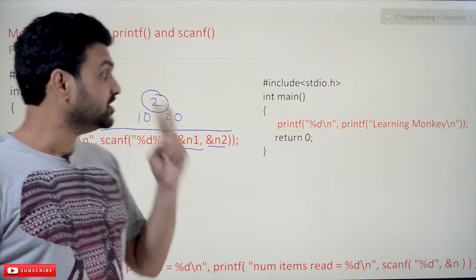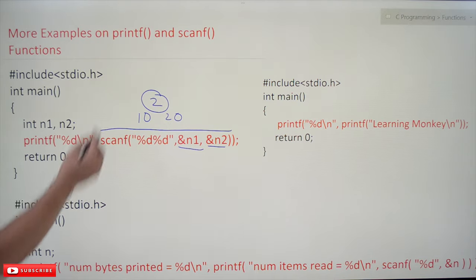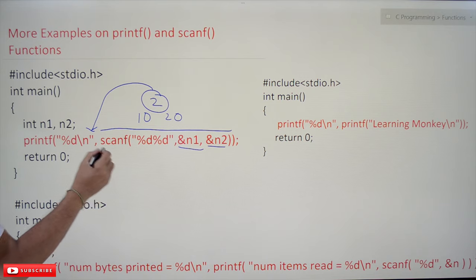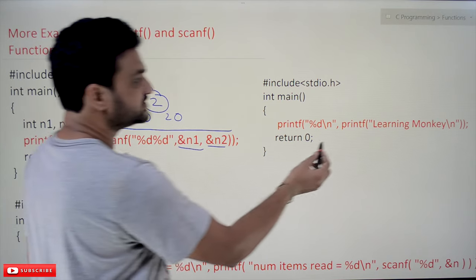So the return value of the scanf is the number of values that are successfully scanned. Two values got successfully scanned and it is going to produce an output of two, and we are going to print this. The printf function is going to print two.